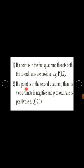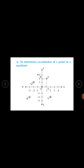If a point is in the second quadrant, then its x-coordinate is negative and y-coordinate is positive. For example, for point Q, x-coordinate is minus 2 and y-coordinate is 1. This is the second quadrant, so x-coordinate is negative (minus 2) and y-coordinate is positive (1).